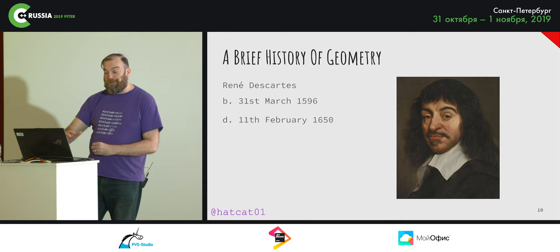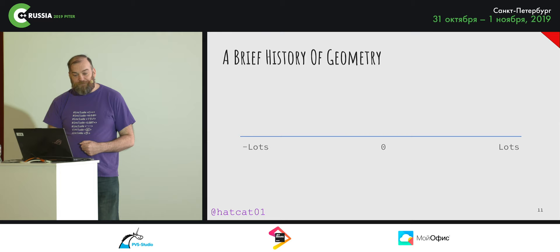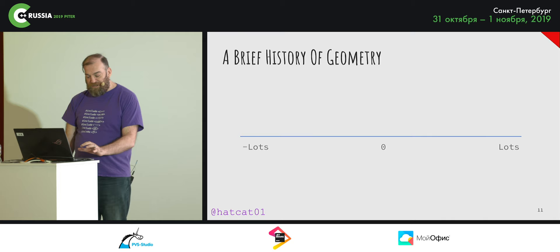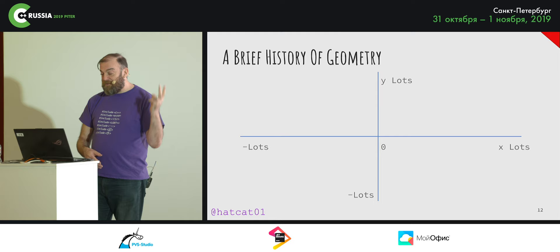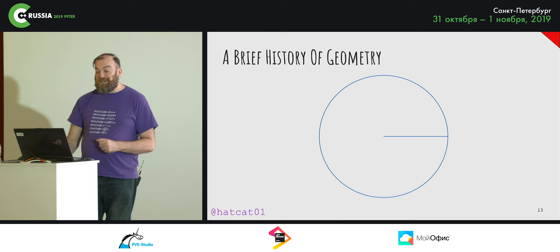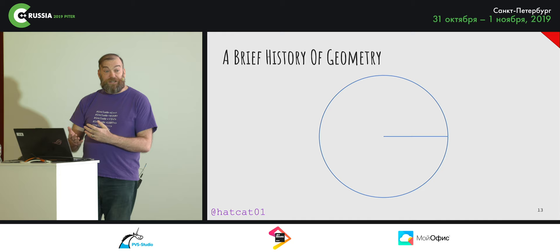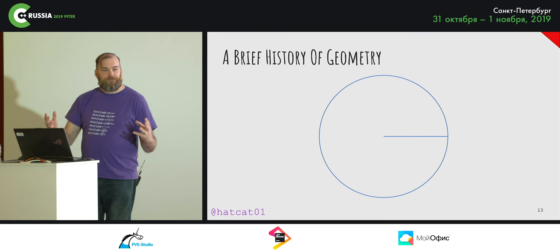The most common coordinate system is the Cartesian system. This takes the real number line and rotates a copy through 90 degrees, so each point is represented as an ordered pair of distances along each axis — horizontal and vertical. Less common is the polar system, where each point is represented as a distance from an origin and an angle of rotation, which is incredibly useful when working with rotations, but not so much for straight lines and linear motion.